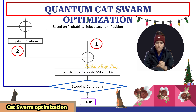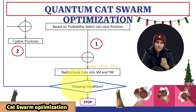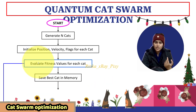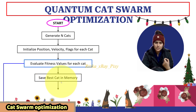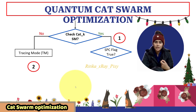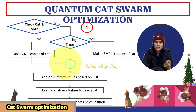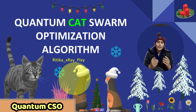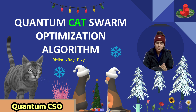After updating positions, both seeking mode and tracing mode are combined. Cats are redistributed again into seeking mode and tracing mode. Then we will check the stopping condition — whether it is met or not. If it is met, stop and display the best solution found; else we will repeat the loop, evaluate fitness value for the new solution, rank cats, save the best in memory, then check whether each cat is in seeking mode or tracing mode and repeat all steps.